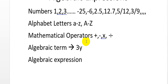For example, I wrote 3y. I have a number and I have an alphabet letter. In mathematics, we refer the letter as an unknown term — 3 is a known term, a constant value, while y doesn't carry any fixed value, so we call it an unknown term. Using an alphabet letter and a number together, we have created something called an algebraic term.